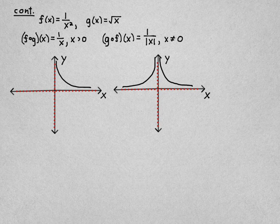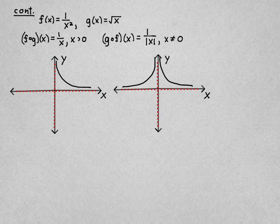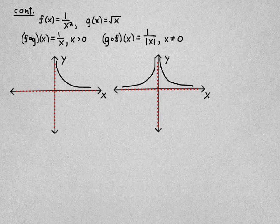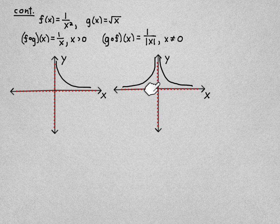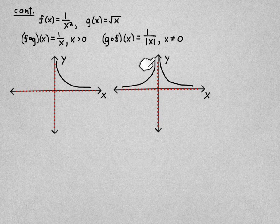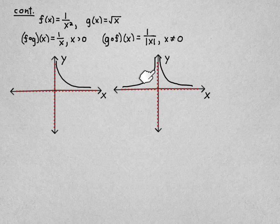And then this other one, the left side, instead of being down here, is flipped up here. So we still have two branches, but because of the absolute value, this is flipped up there.